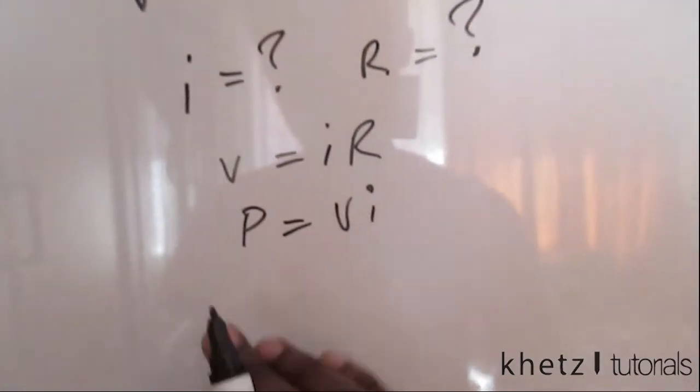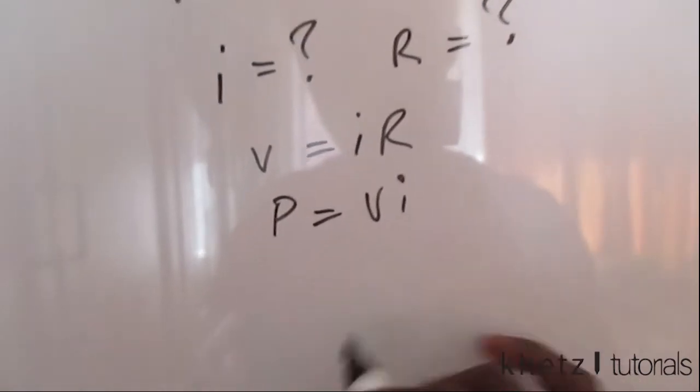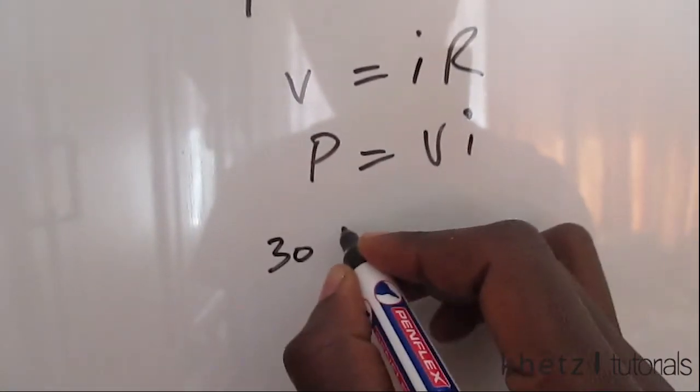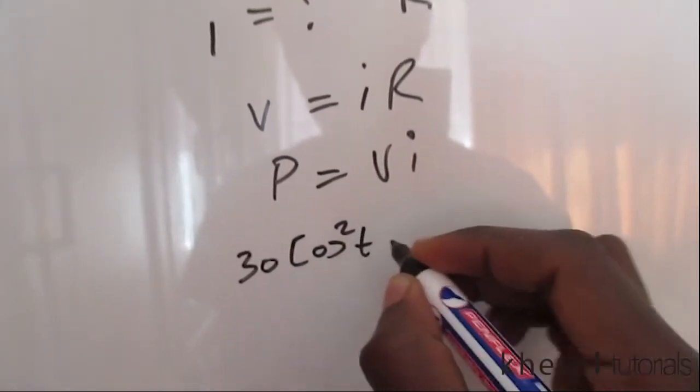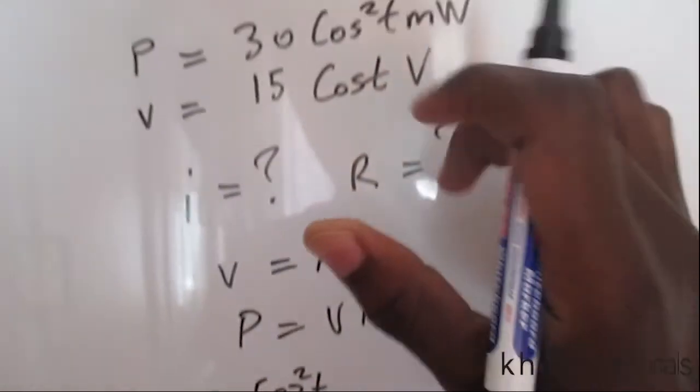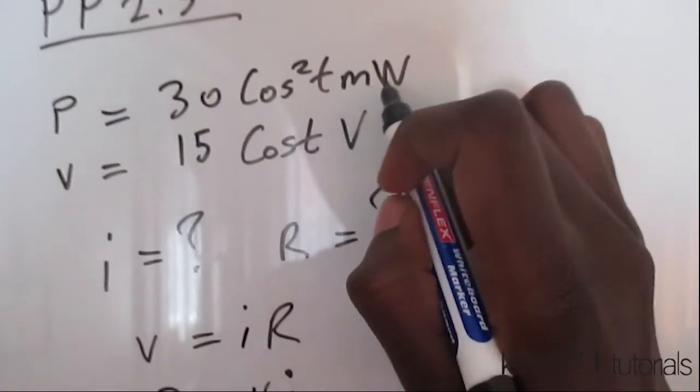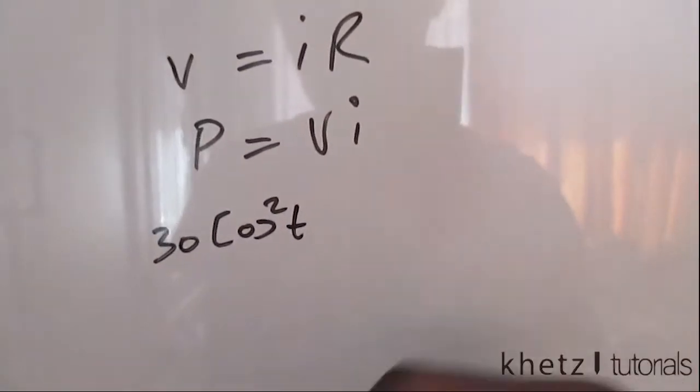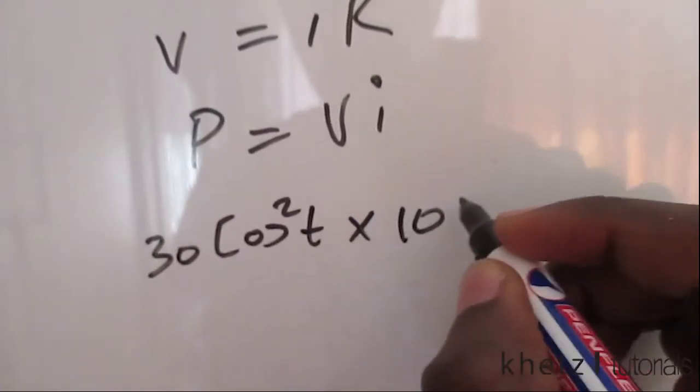Using the power formula P equals VI, plug in the power which is that, and not forgetting the units, I'm going to convert this milli into its numerical value or representation which is times 10 to the minus 3.